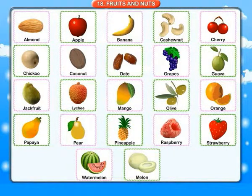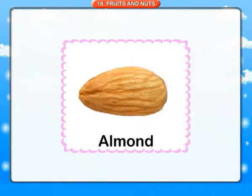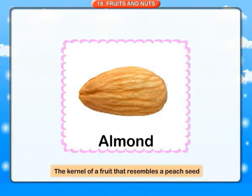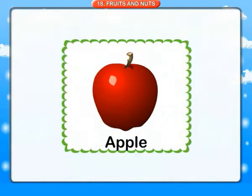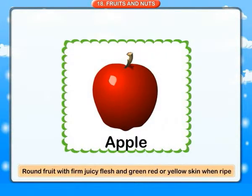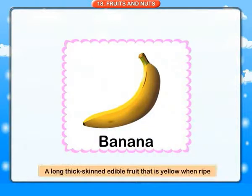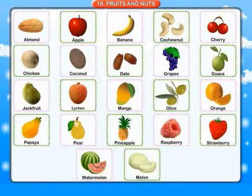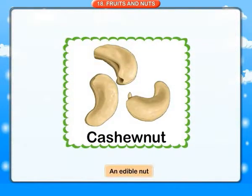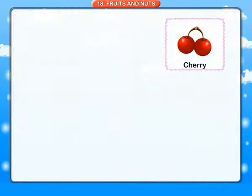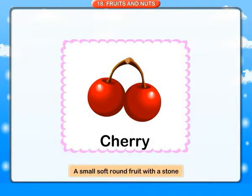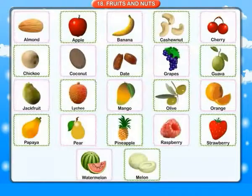Fruits and nuts. Almond: the kernel of a fruit that resembles a peach seed. Apple: a round fruit with firm juicy flesh and green, red or yellow skin when ripe. Banana: a long thick-skinned edible fruit that is yellow when ripe. Cashew nut: an edible nut. Cherry: a small soft round fruit with a stone.